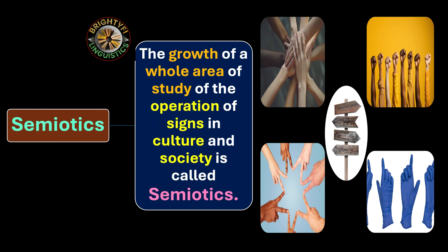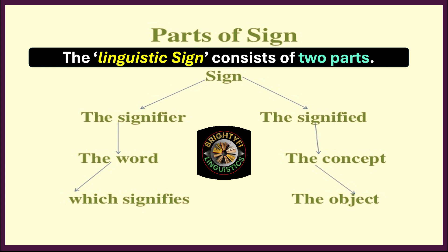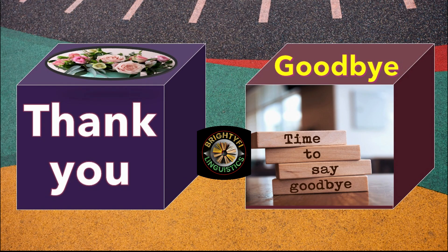The growth of a whole area of study of the operation of signs in culture and society is called semiotics. To summarize: the linguistic sign consists of two parts — the signifier and the signified. The signifier is further referred to as the word, and the signified is further referred to as the concept. The word signifies the object or mental image. Hope you understand the concept. Thank you.